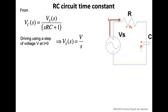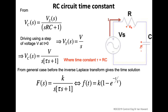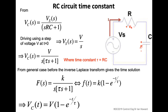Driving by a step voltage V at t=0, V(s) becomes V/s, so substituting in: Vc equals V divided by s(tau*s + 1) where tau equals RC. We know the inverse Laplace transform gives the form k*(1 - e^(-t/tau)), and with k equal to V, the capacitor voltage is V*(1 - e^(-t/tau)) — the charging voltage across the capacitor.